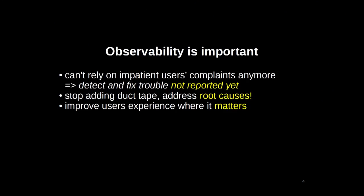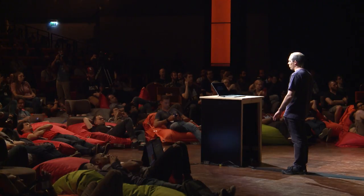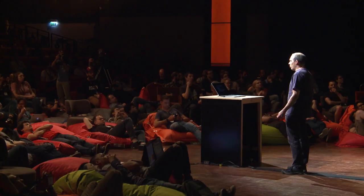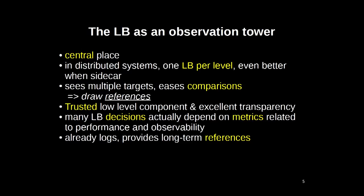The problem is that you cannot rely anymore on end users' complaints, because when a website does not work correctly, they simply switch to another one. So you are on your own to detect whatever is going wrong and to fix it properly, not just putting a band-aid on it. The load balancer is a nice observation point because it's always placed in the center of the infrastructure and has access to everything. If you have multiple layers in your infrastructure, you have multiple layers of load balancing and therefore multiple observation points.